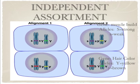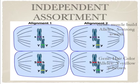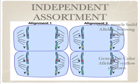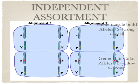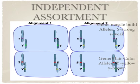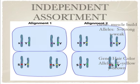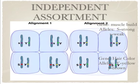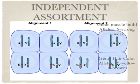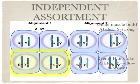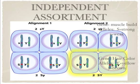The cell may adopt alignment one, in which the little s and big Y alleles end up in the same daughter cell. Or the cell may adopt alignment two, in which the little s and big Y alleles end up in separate daughter cells. During the second half of meiosis, the two cells from each alignment divide into four haploid cells. The result is an equal number of the possible genotypes: little s big Y, big S little y, little s little y, and big S big Y.